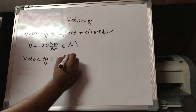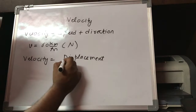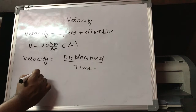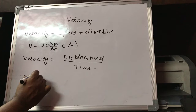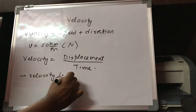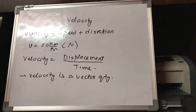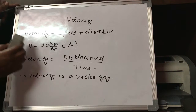Mathematically, velocity is defined as the ratio of displacement and the time interval — velocity equals displacement divided by time interval. Because displacement is a vector quantity, velocity is also a vector quantity. So one very big difference between speed and velocity is that speed is a scalar quantity and velocity is a vector quantity.